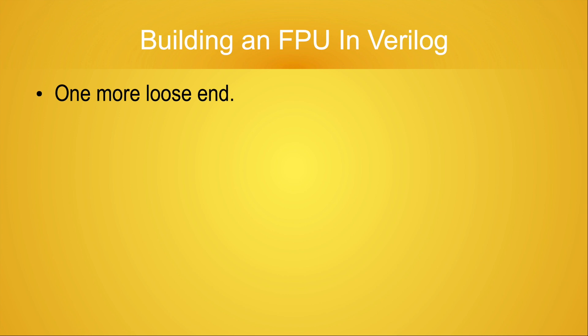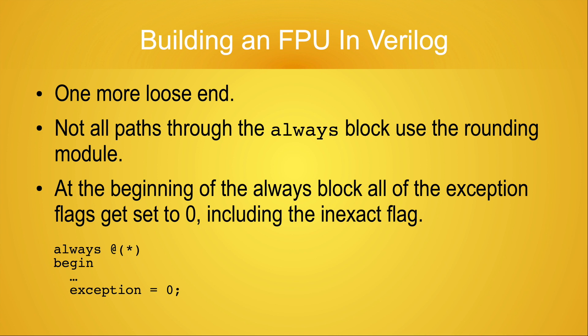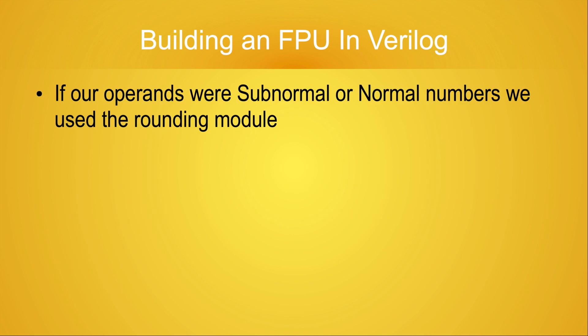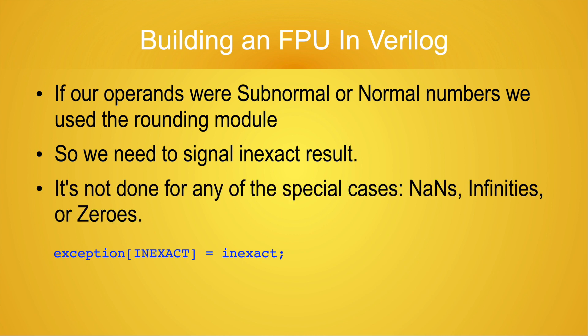There's one final detail. There are multiple paths through the always block, and some of the paths don't use the results of the rounding module. When the always block is entered, all of the exception flags are cleared, including the inexact flag. If our two operands were subnormal or normal numbers, we use the rounding module. For the paths which use the rounding module, we need to use the inexact flag returned by the rounding module to set the appropriate bit in the exception vector. For any of the cases where one of the operands was a NaN, an infinity, or a zero, the inexact flag gets left unset.